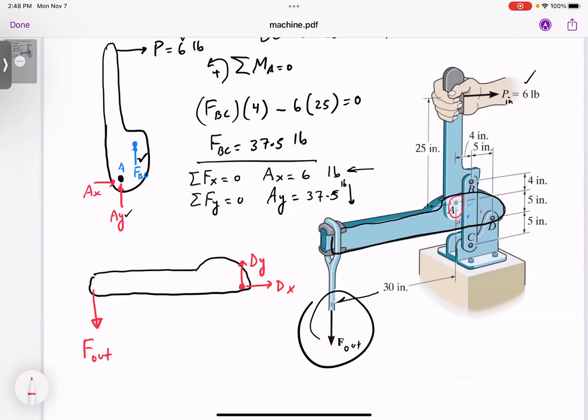What is happening at A? You guys remember from analysis of frames and machines that when you go from one member to another member, if you've already determined the forces on this member, remember the correct direction of Ax and Ay. We determined that Ay is 37 and a half down and Ax is six to the left. When we show these forces on this arm, remember A is somewhere here. Action reaction, so the Ax to the left has to be to the right and Ay down has to be up.